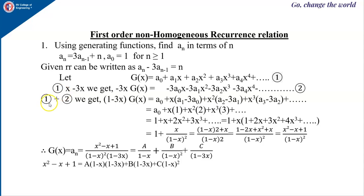Adding equations 1 and 2, we get (1 − 3x)·G(x) = a₀ + x(a₁ − 3a₀) + x²(a₂ − 3a₁) + x³(a₃ − 3a₂) + ···